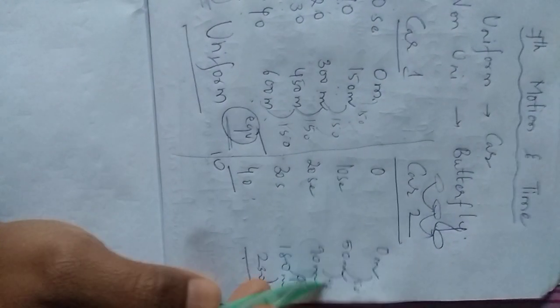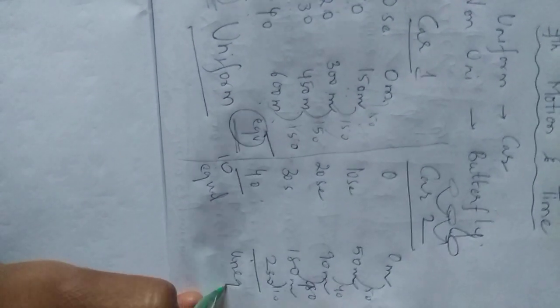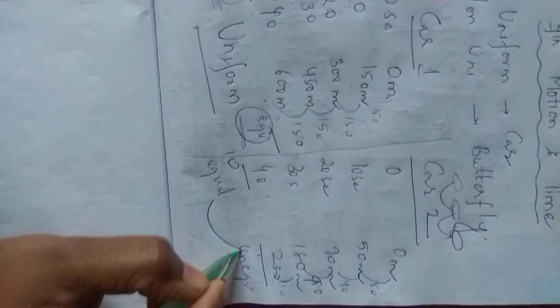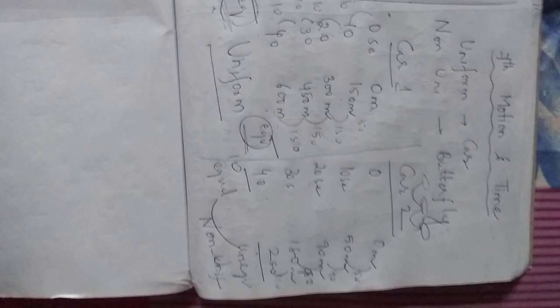So here the difference is not same. Here equal intervals are there, but unequal distance is there. So the car is moving in non-uniform motion. From the definition only, we can say equal intervals of time, equal distance - both are equal means that is moving in uniform motion. And both are not equal, one is equal and one is unequal means that is non-uniform motion.